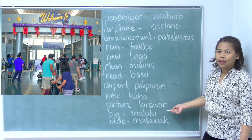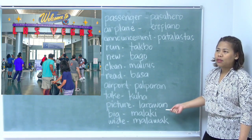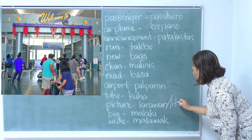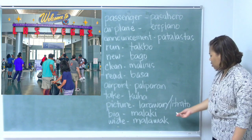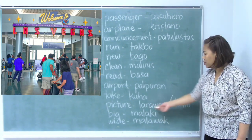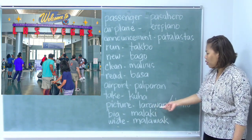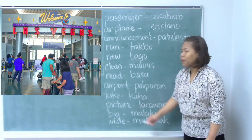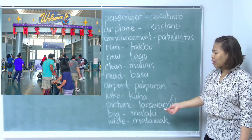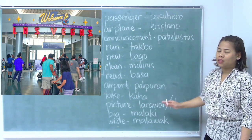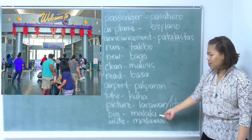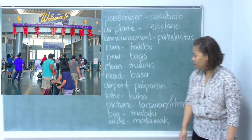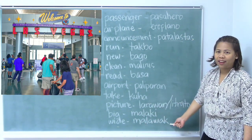Picture is larawan. There's another term — it's litrato. But we don't use these two in conversational speech; this is formal. So we say picture — just use picture. But in our sentences, we would need to use the Filipino translation for each word. Big — malaki is the translation. Wide is malawak.